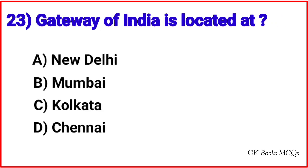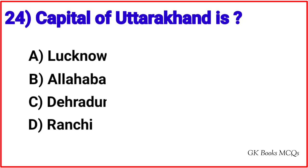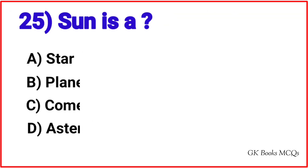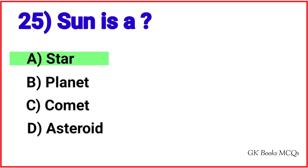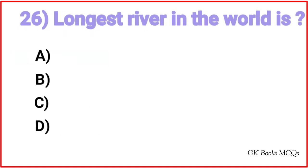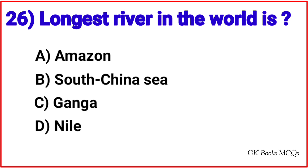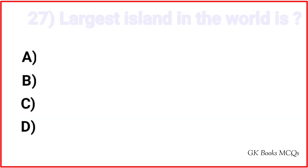Question 24: Capital of Uttarakhand is? Correct answer is option C, Dehradun. Question 25: Sun is a? Correct answer is option A, Star. Question 26: Longest river in the world is? Correct answer is option D, Nile River.